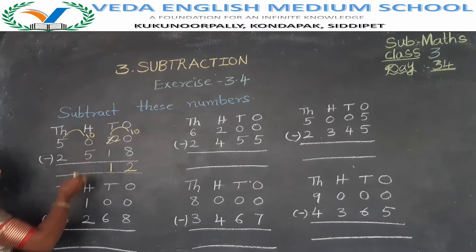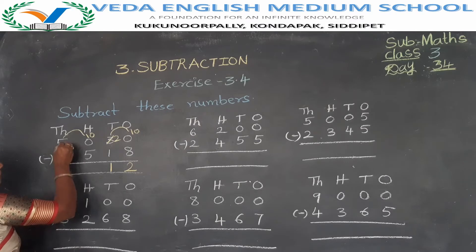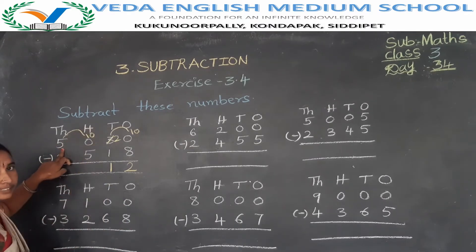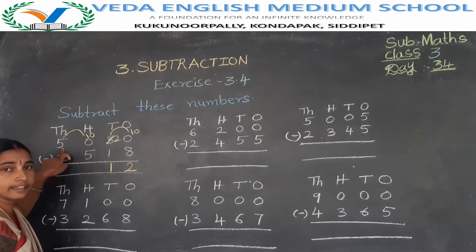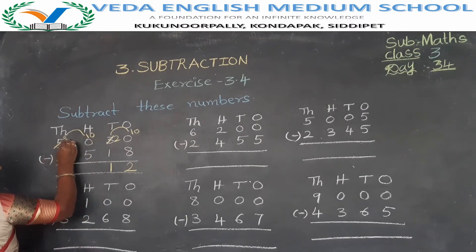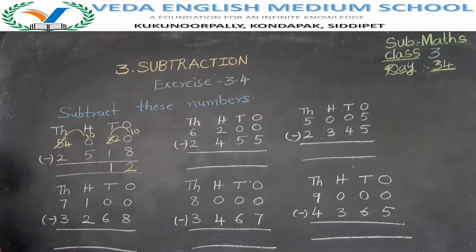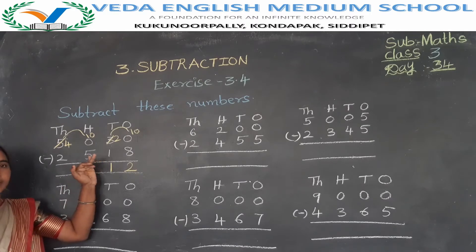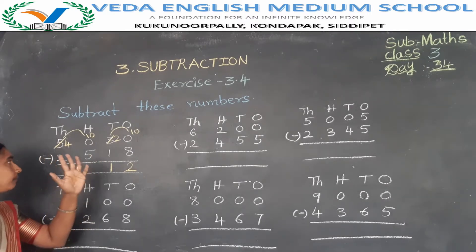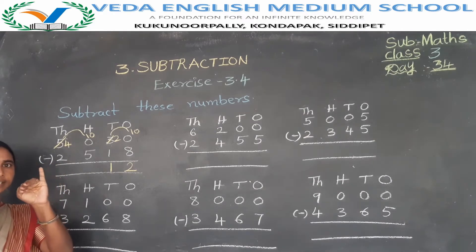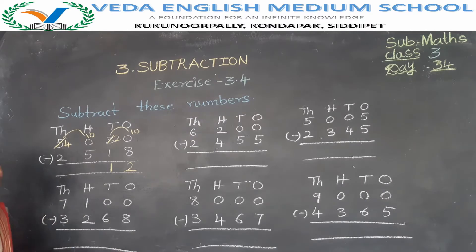10 plus 0 is 10. First of all we had 5000, but 1000 has gone to the hundreds place, so how many thousands are here? Only 4000. So 5 becomes 4. Now do the subtraction in the hundreds place: 10 minus 5. Using backward counting: 10, 9, 8, 7, 6, 5. So 10 minus 5 is 5.